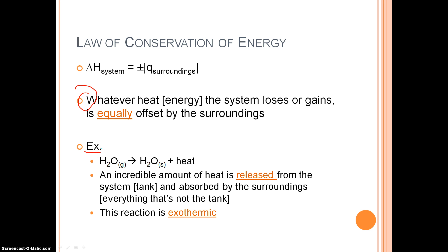For example, H2O gas going to a solid is a process called sublimation, and it releases a lot of heat. Let's say we have a tank of water vapor that suddenly becomes solid water or ice — a lot of heat is released from the system, the tank, and it's absorbed by the surroundings, everything that's not the tank. This reaction is exothermic because the system released heat; we didn't add heat into the system. When a system releases energy, we call this an exothermic reaction.